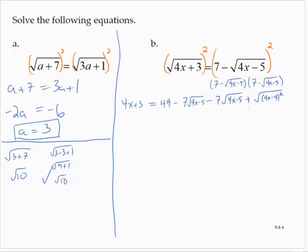Now that square root of 4x minus 5 squared is just 4x minus 5. All right, so I have 4x plus 3. I have 49 minus 5, 49 minus 5 is 44, plus the 4x. And I have those like radicals, so minus 14 times the square root of 4x minus 5.